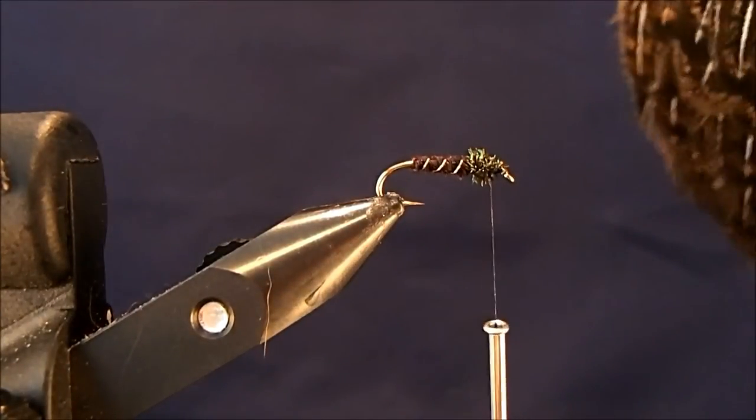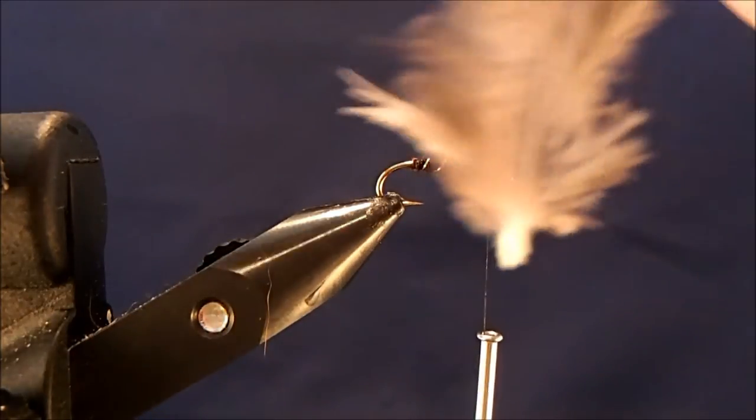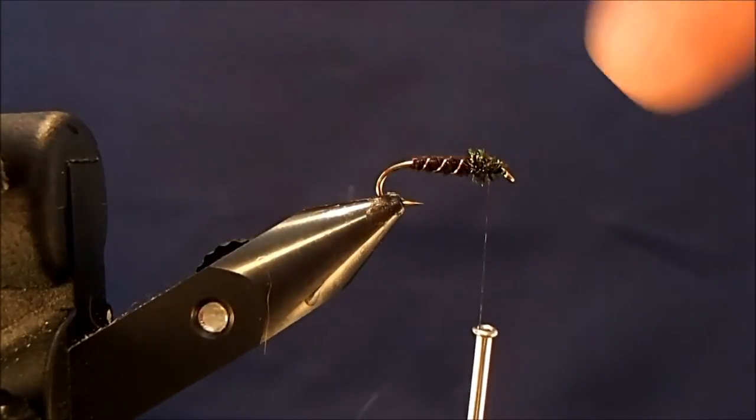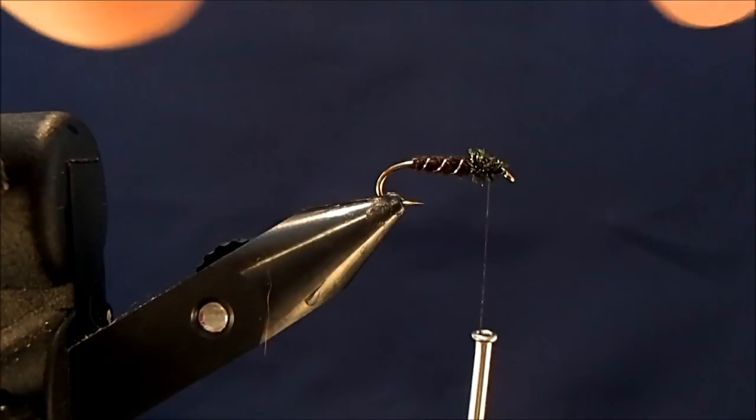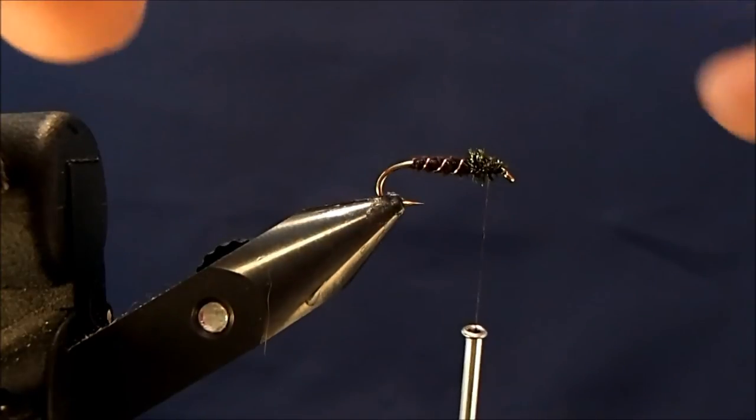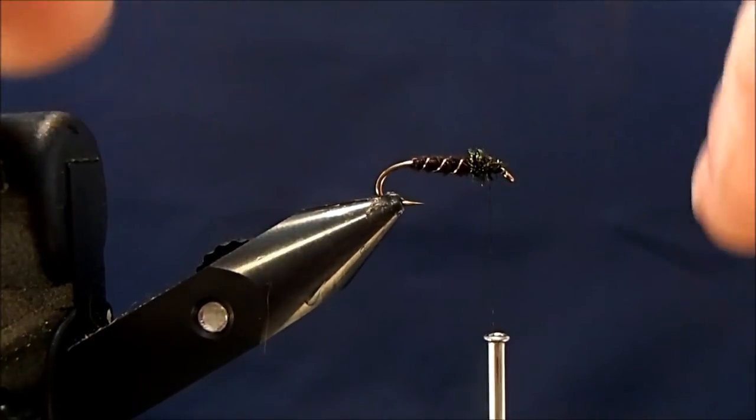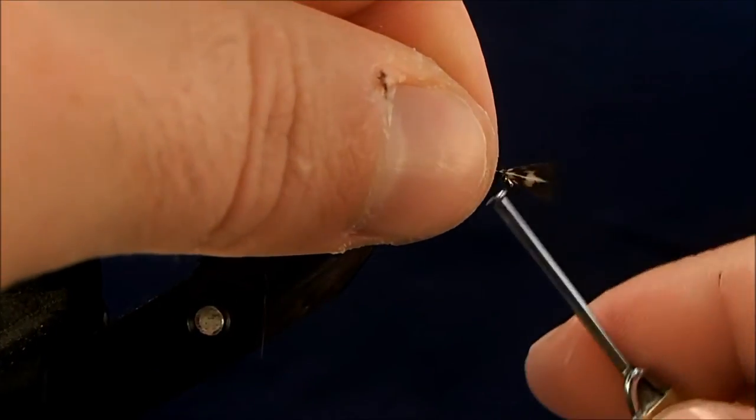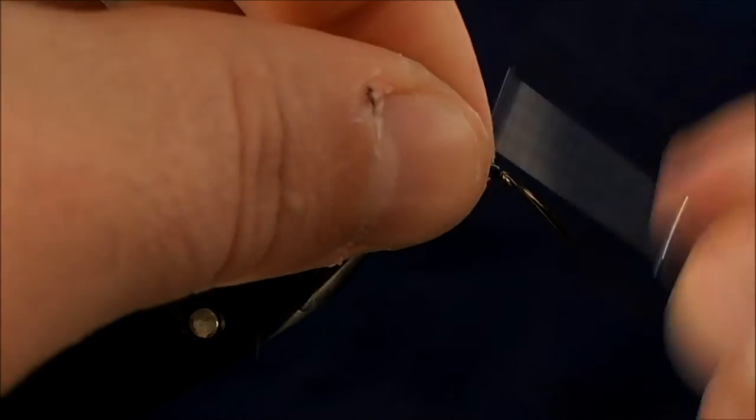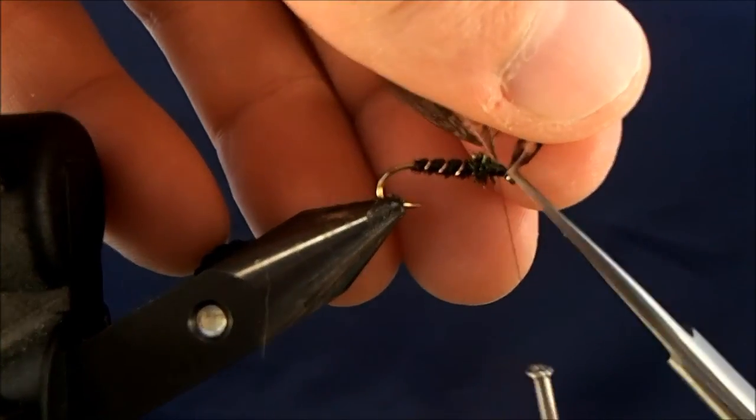And you can use partridge or whatever you'd like. I'm just going to pull off a feather here. And then clean up the bottom. And I can pull that back and try to take as much as I want to use for my legs. And that looks about right. So then I'm going to tie it in tip first. And again, I'll tie everything back away from that eye. I can clean that up now, that tip that it's secure.